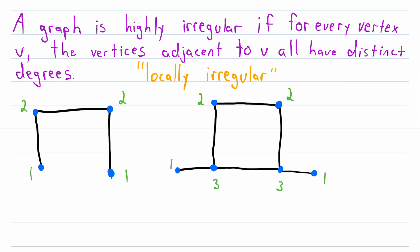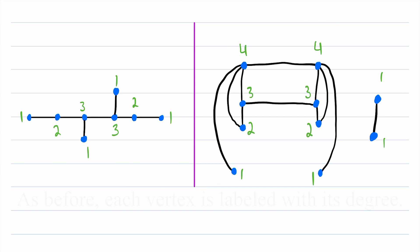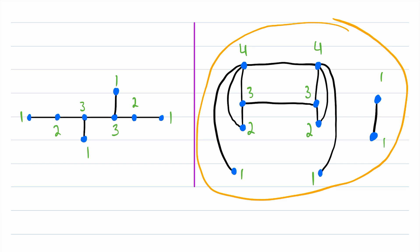So that is what a highly irregular — or locally irregular — graph is. One more time: a graph is highly irregular if, for every vertex in the graph, the vertices adjacent to that vertex all have distinct degrees. Highly irregular graphs also have some interesting properties we could discuss in another lesson. I encourage you to try to find some of their interesting properties on your own and sketch out some of your own highly irregular graphs. Here are two more examples of highly irregular graphs — the one on the right is an example of a disconnected highly irregular graph.